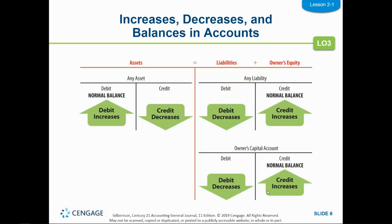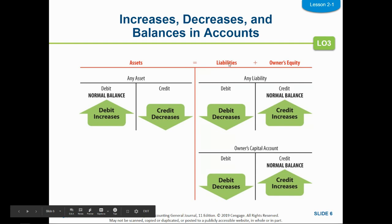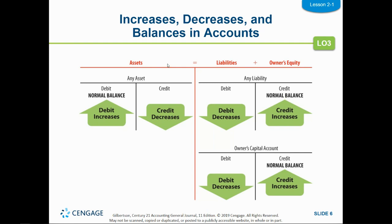Looking at this slide, when we say falls on the left or the right, we use the equal sign in assets equals liabilities plus owner's equity as the divider for our T. Left and right mean left and right of the equal sign. So any asset has a normal balance of a debit — goes up with the debit, down with the credit. Any liability has a normal balance of a credit because it's on the right side of the equal sign — goes up with the credit, down with the debit. Owner's capital is the same: goes up with the credit and down with the debit.